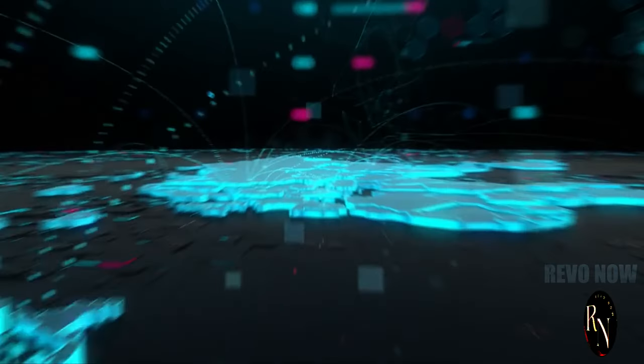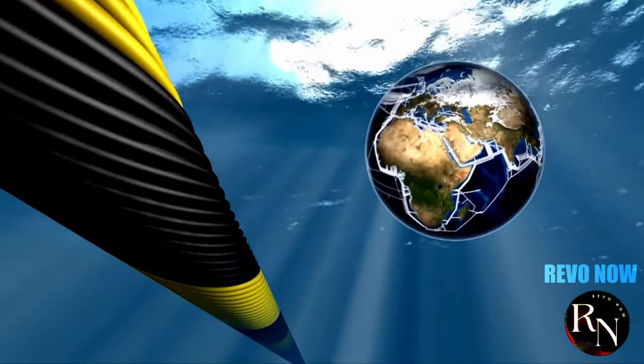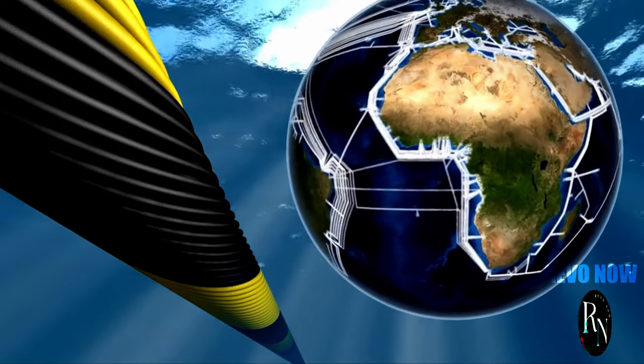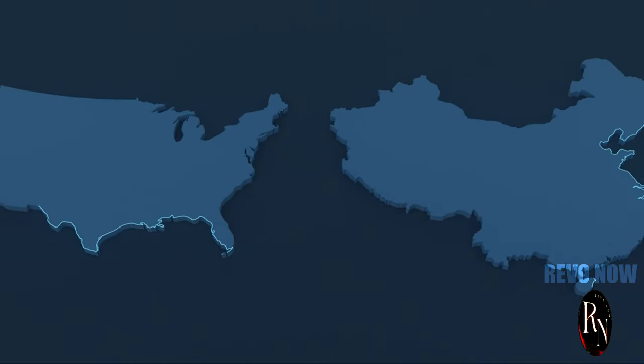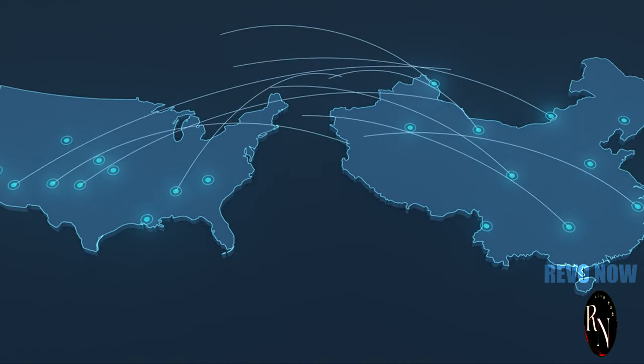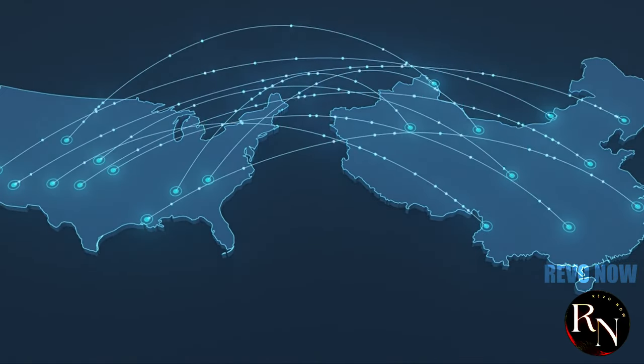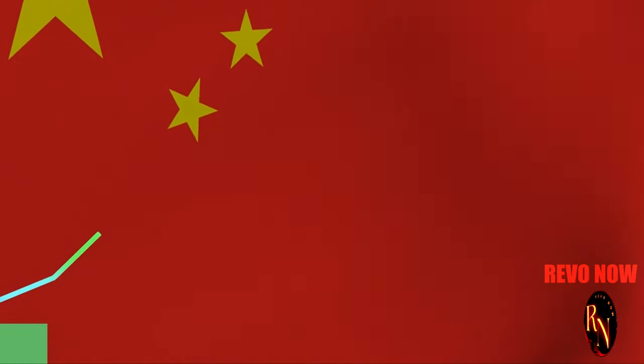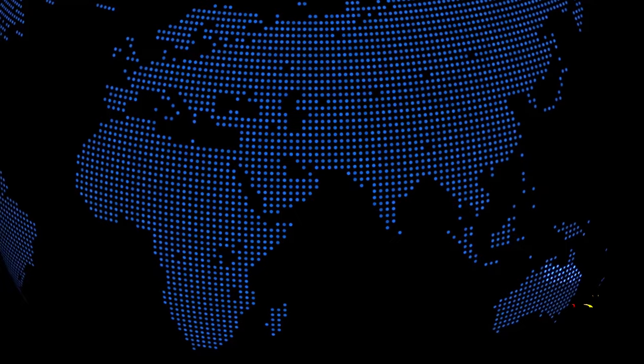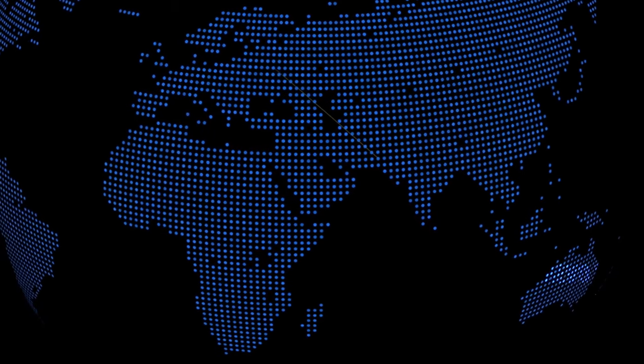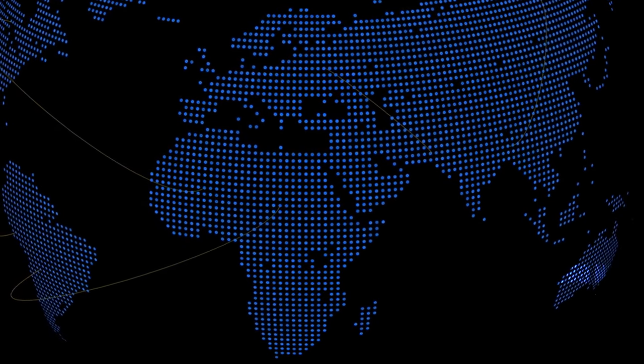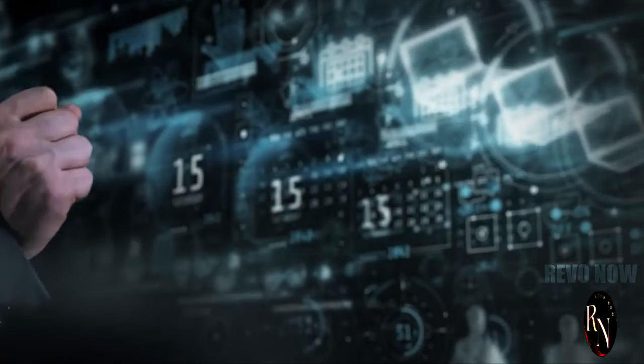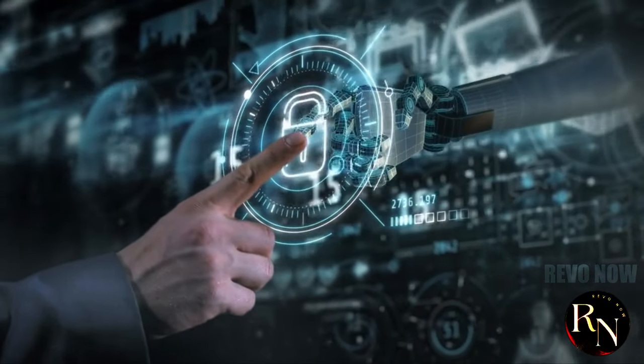But why does China care so much? The answer is multifaceted. First, it reduces China's reliance on US-dominated infrastructure, bolstering its technological independence. Second, it provides a strategic advantage in the event of conflict. Third, it allows China to export its model of internet governance characterized by greater control and censorship.